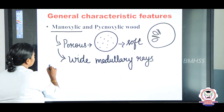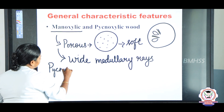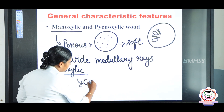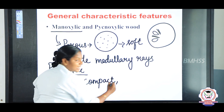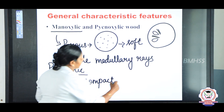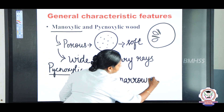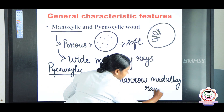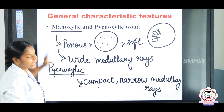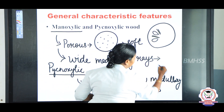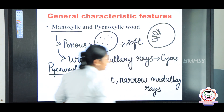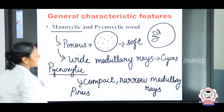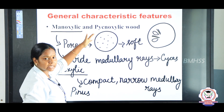Pycnoxylic wood is just the opposite — it is compact, meaning tightly packed, and has narrow medullary rays. The example for manoxylic wood is Cycas, and the example for pycnoxylic wood is Pinus. This is the main difference between manoxylic and pycnoxylic wood.